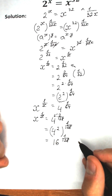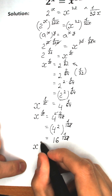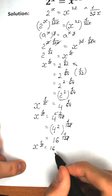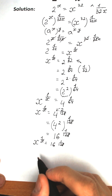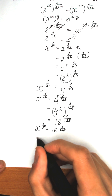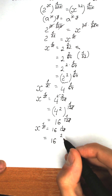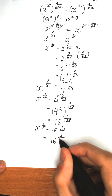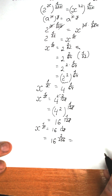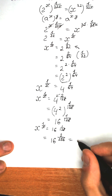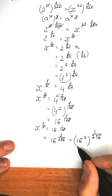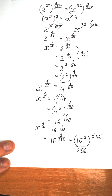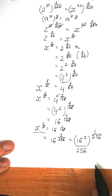Let's do the same step once more. We write 16 to the power 1 over 128 as 16 to the power 2 over 256. This equals 16 squared to the power 1 over 256. And this is a really interesting moment because 16 squared equals 256, so we get 256 to the power 1 over 256. After all simplifying steps we have x to the power 1 over x equal to 256 to the power 1 over 256.